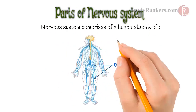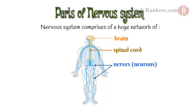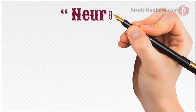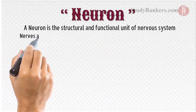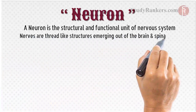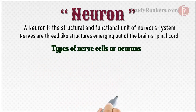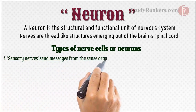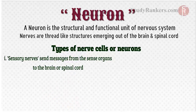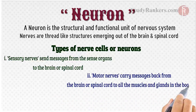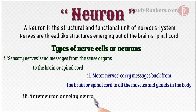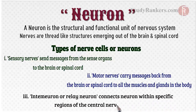Parts of the nervous system: The nervous system comprises a huge network of nerves, brain and spinal cord. A neuron is the structural and functional unit of the nervous system. Nerves are thread-like structures emerging out of the brain and spinal cord. Types of nerve cells or neurons: sensory nerves, which send messages from the sense organs to the brain or spinal cord; motor nerves, which carry messages back from the brain or spinal cord to all the muscles and glands in the body; and inter-neurons or relay neurons, which connect neurons within specific regions of the central nervous system.